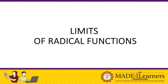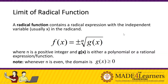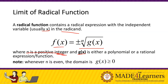Hello guys, this is the last part of Lesson 2. We will have limits of radical functions. A radical function contains a radical expression with an independent variable, usually the variable x, in the radical. So our radical function is the positive or negative nth root of g(x). Remember that n is a positive integer — it can never be a fraction, so it must be a whole number. And g(x) is either a polynomial or a rational expression.